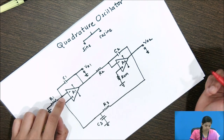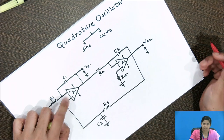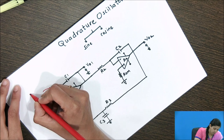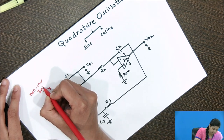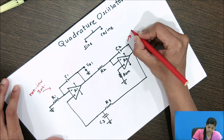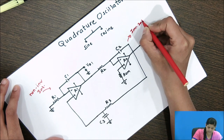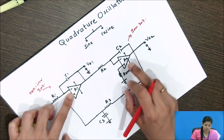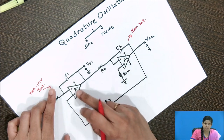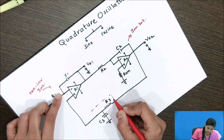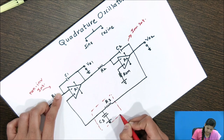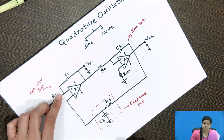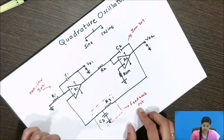We need to identify the circuits formed by A1 and A2. The circuit formed by A1 is a non-inverting integrator, and the circuit formed by A2 is a purely inverting integrator. These two circuits form the amplifier factor of this oscillator, and R3 C3 forms the feedback circuit. The output of A2 is given to A1 through the voltage divider circuit, which is R3 C3.